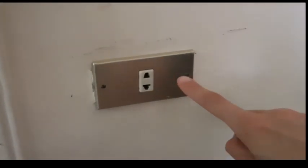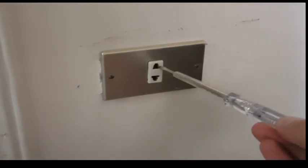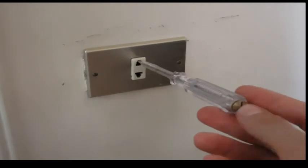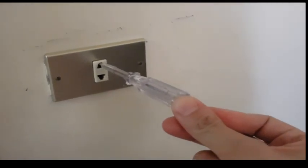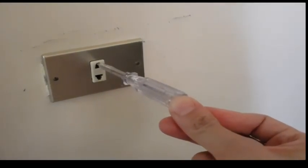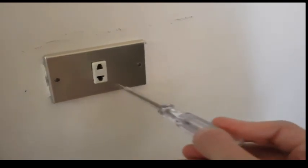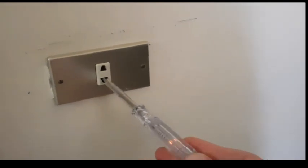So here we want to check which one is the live and which one is the neutral. So we use the tester, we insert it here, and we close it with our thumb. It doesn't glow, so this one is the neutral. So the other one must be the live, and it glows.